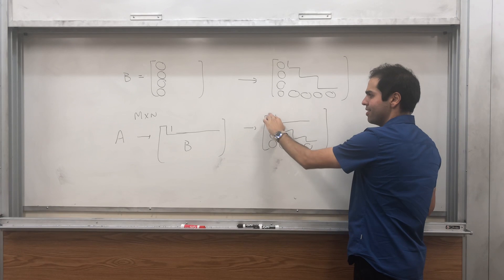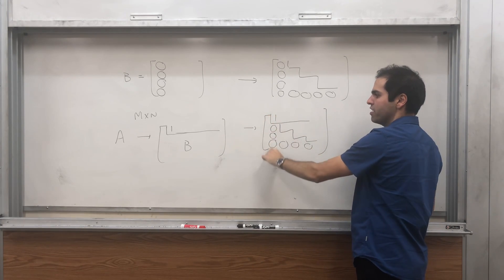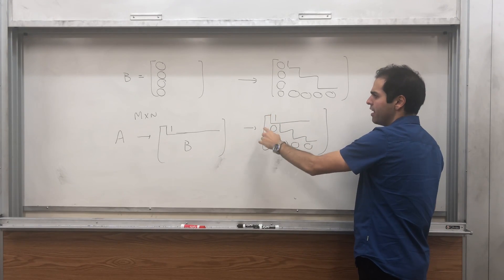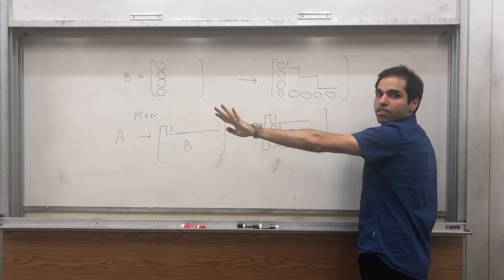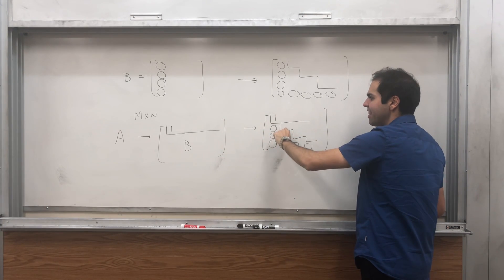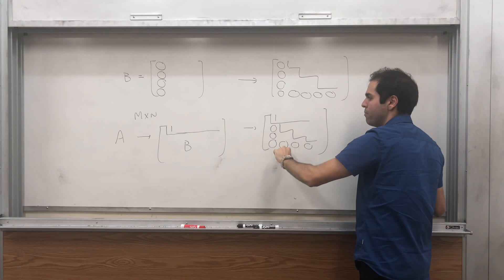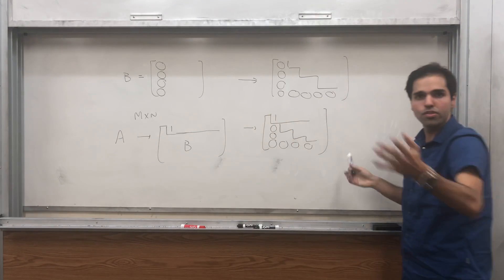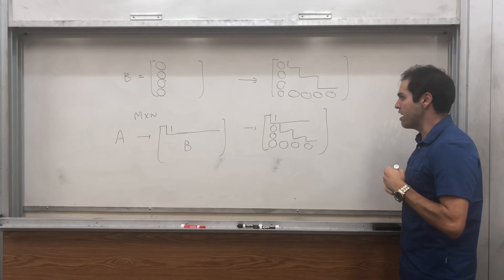And then, is everything to the left or below the pivot zero? Well, yeah. Here, everything at the bottom of this pivot is zero, and there's nothing here to the left, so it's fine too. And then everything to the left and the bottom of B is also zero, because B is in row echelon form.